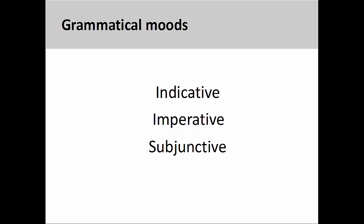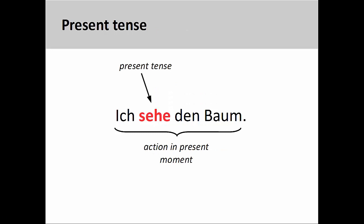Moods are not to be confused with verb tenses, which indicate when the action of a verb occurs. For example, in the sentence you see on the screen, 'ich sehe den Baum' — I see the tree — the verb 'sehe' is in the present tense.